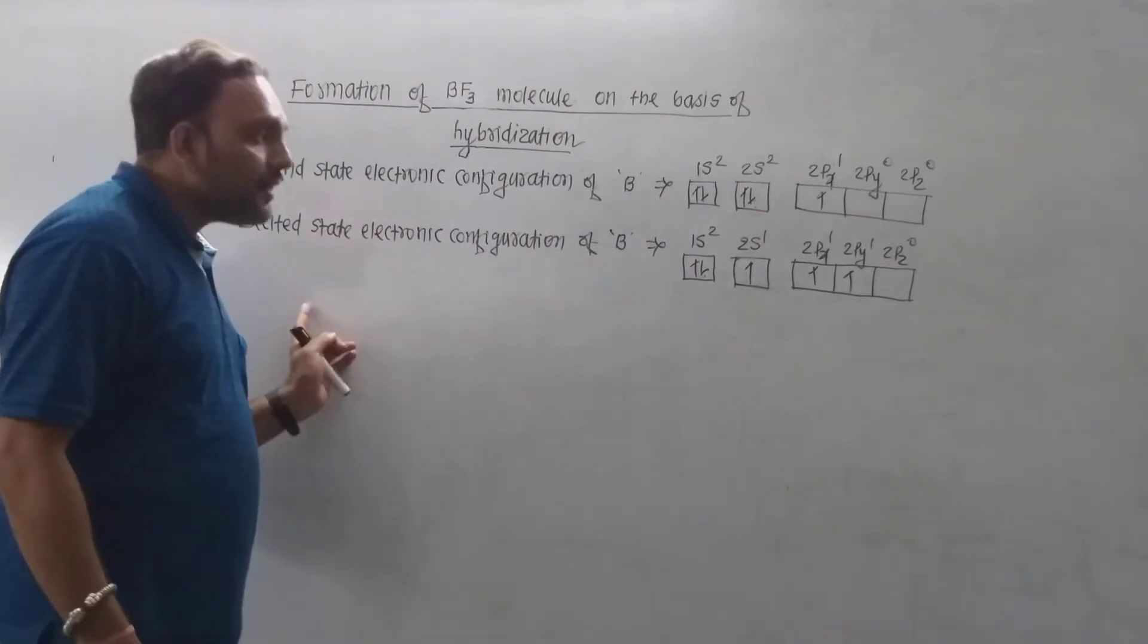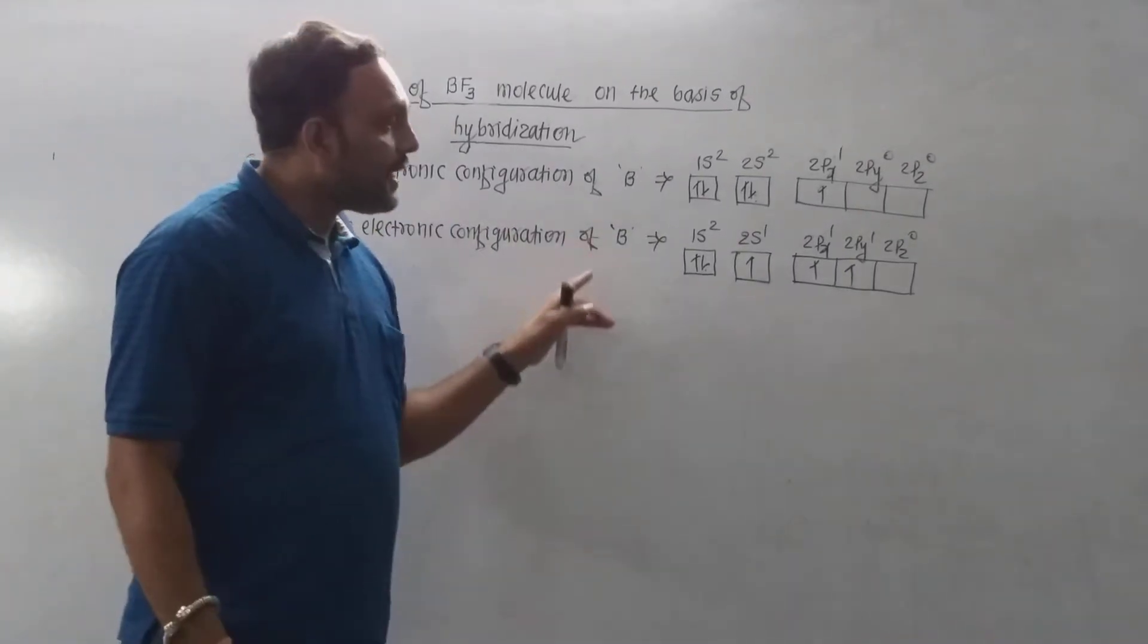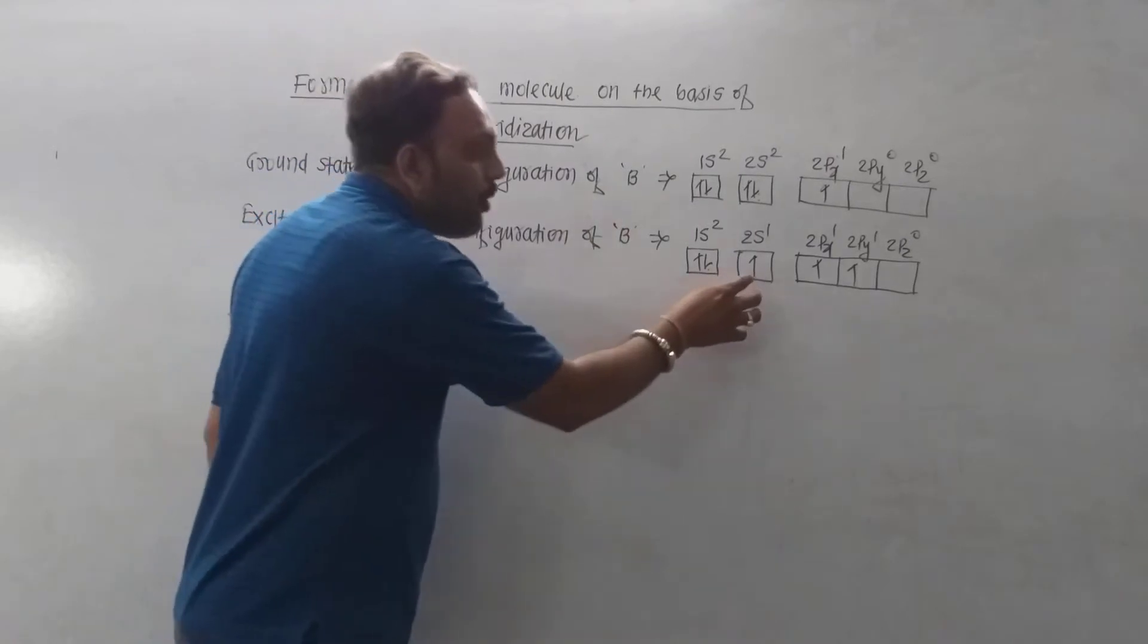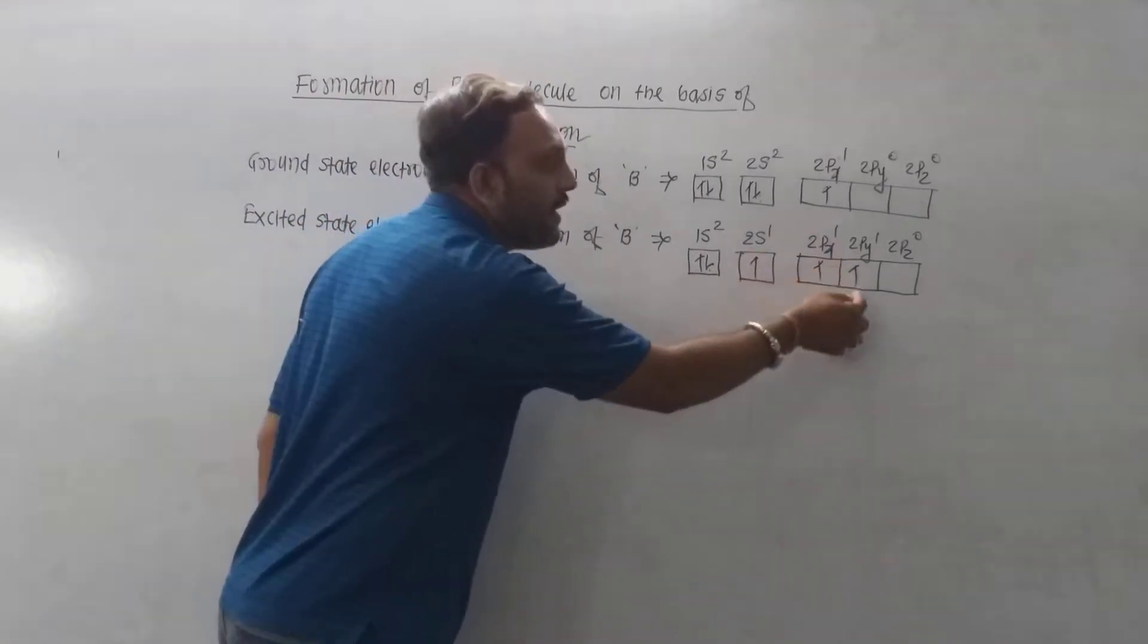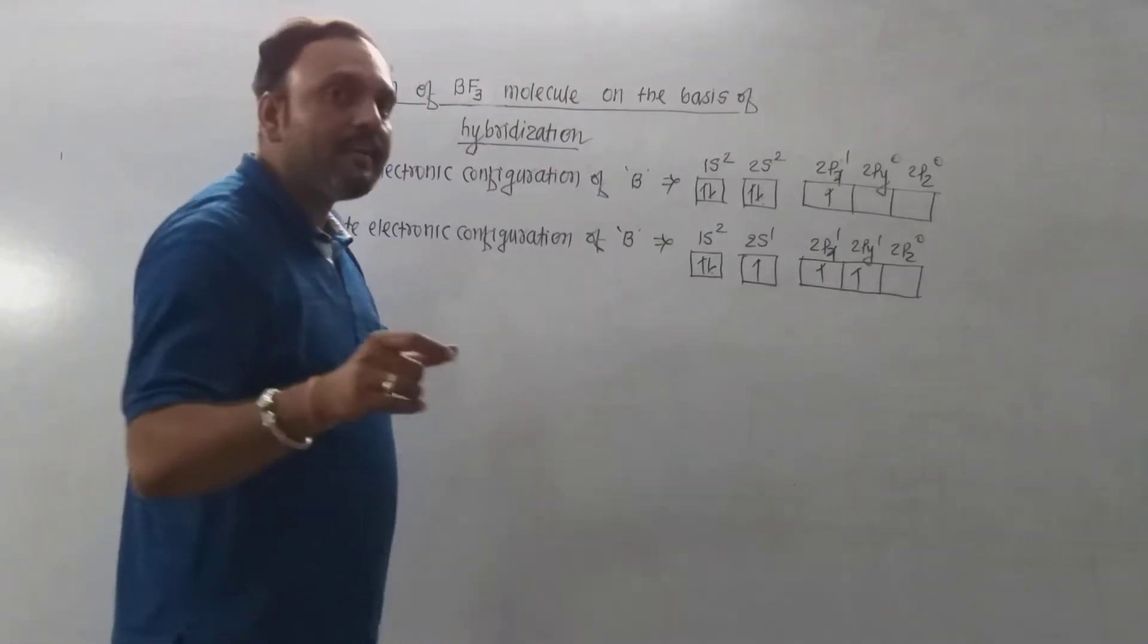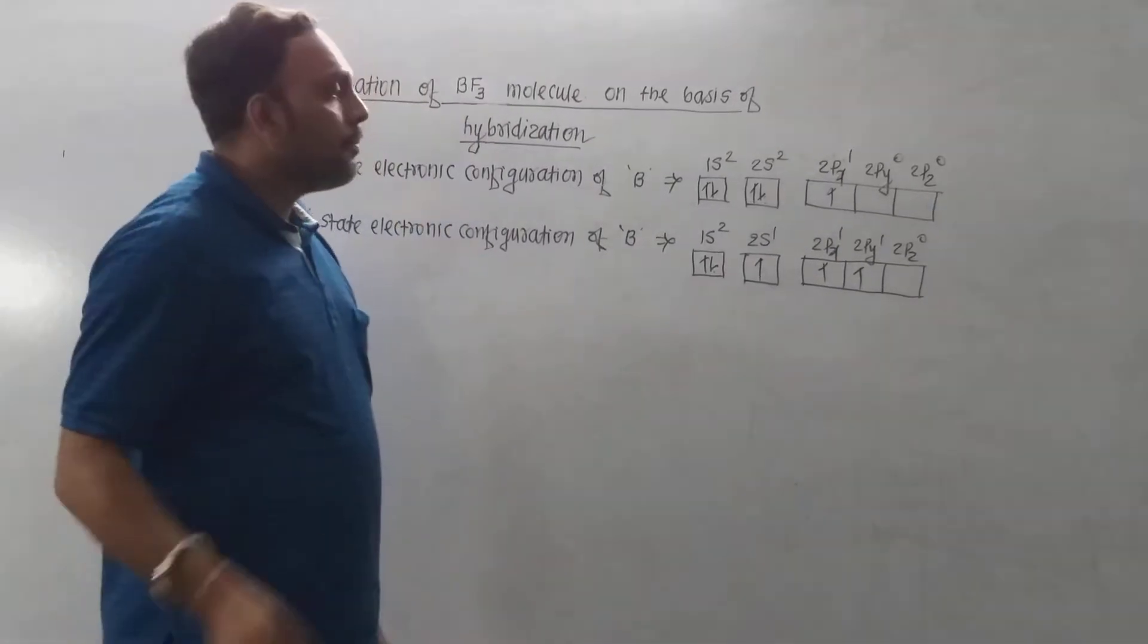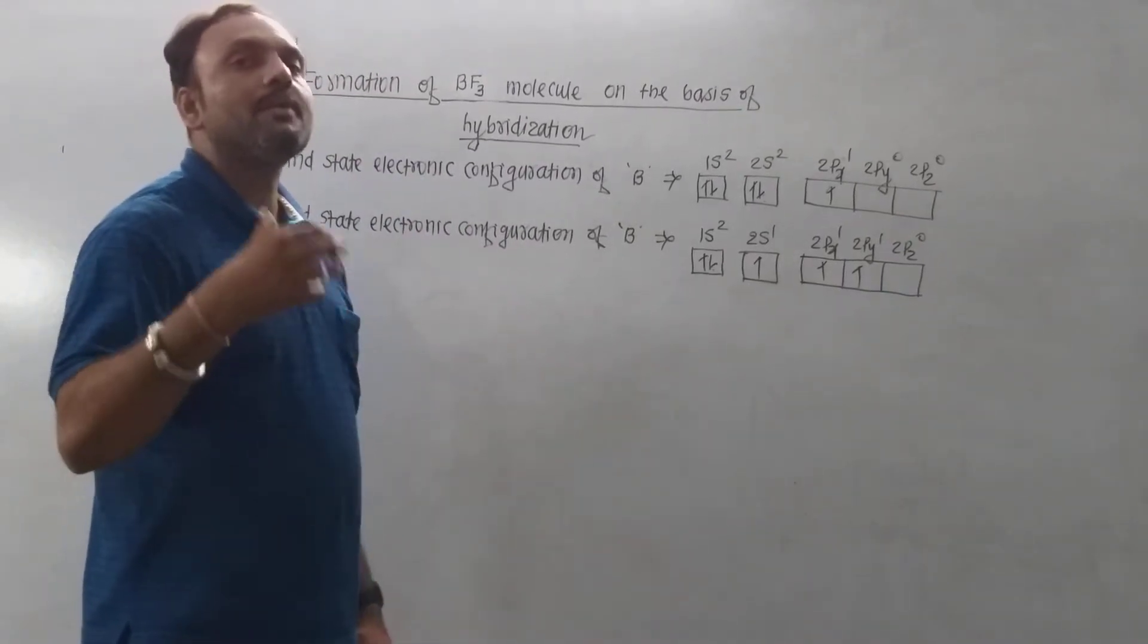Therefore, it undergoes excitation by promoting an electron from the lower energy 2s orbital to the vacant higher energy 2p orbital of the valence shell. In the excited state, boron contains 3 unpaired electrons in the valence shell.